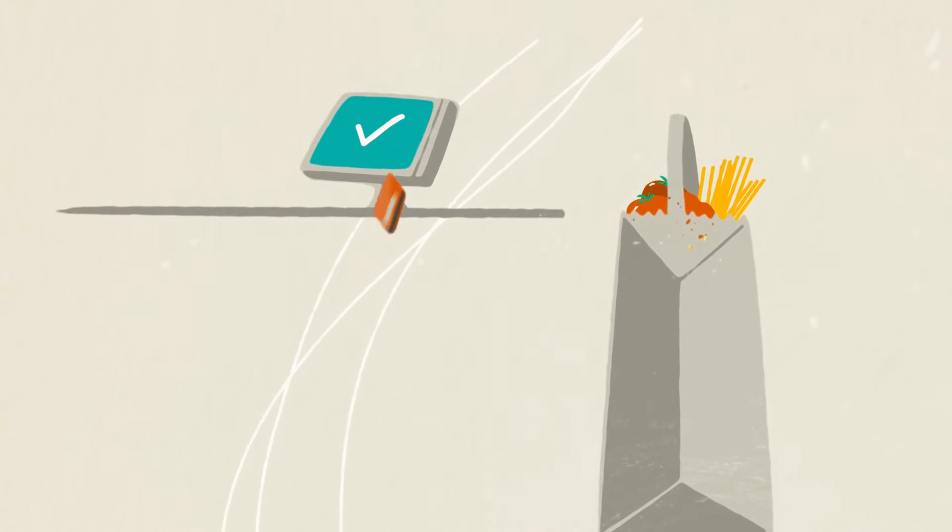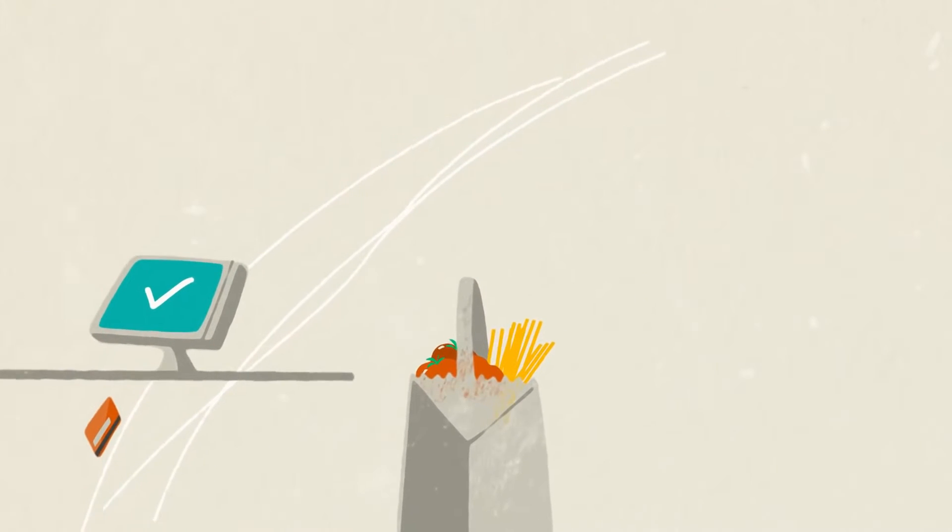Whether you're posting a tweet, watching a YouTube video, or even swiping a debit card, whatever happens, happens because of lines of code.